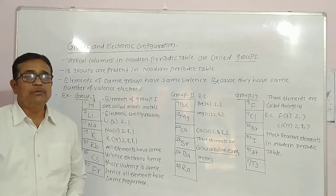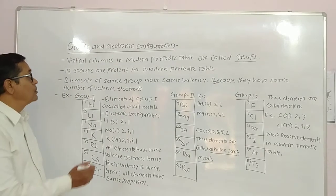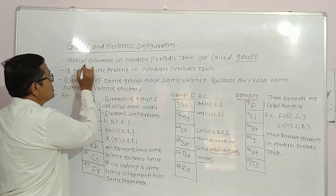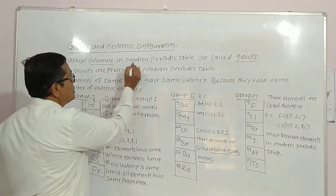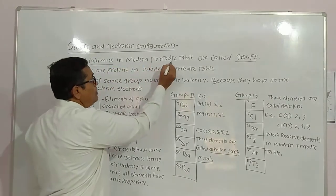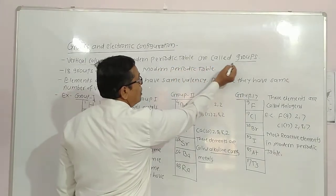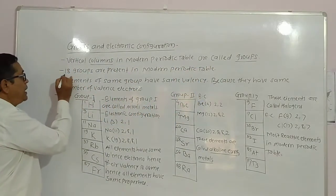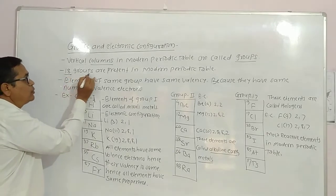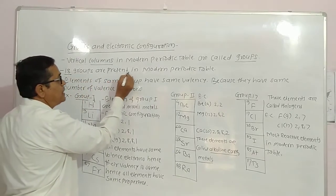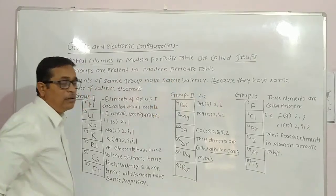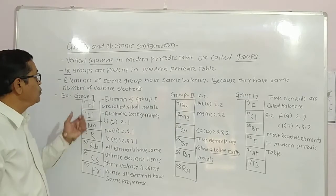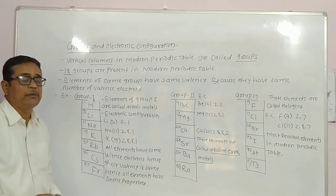Vertical columns in the Modern Periodic Table are called groups. There are 18 groups present in the Modern Periodic Table.